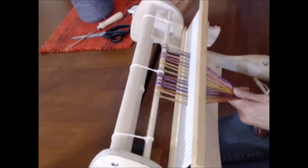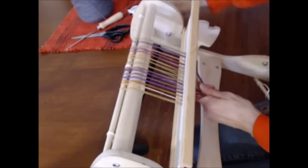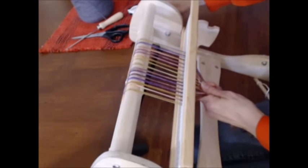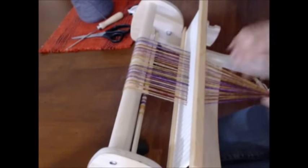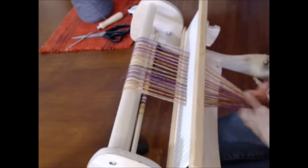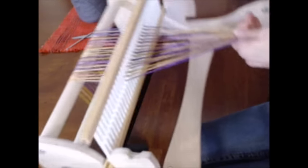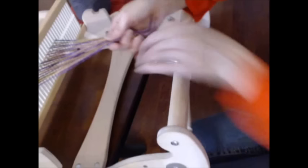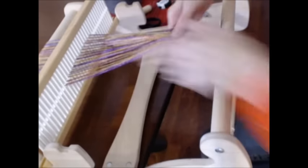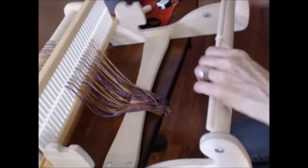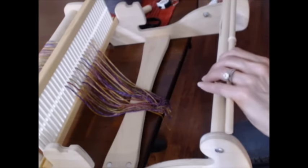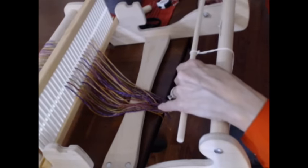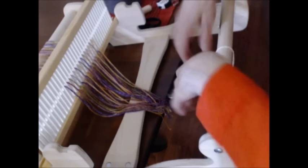And roll this warp enough over the back beam so that the cut ends are seen in the front of the loom, just ahead of the front apron rod, which will also be up and over the front tension beam, just an inch or two.